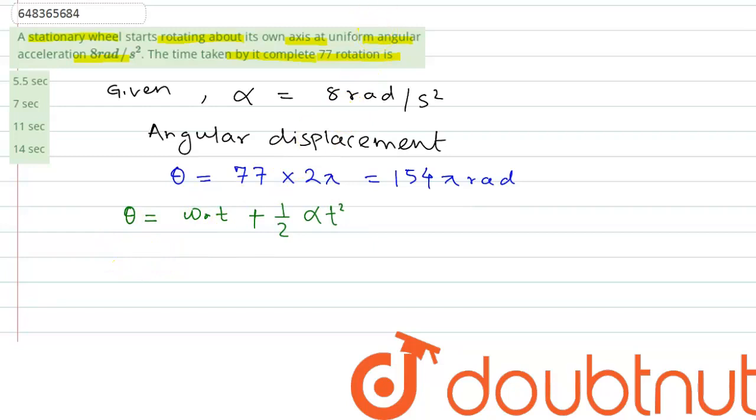So now let us put these values. In place of theta we can write 154 pi. This will be omega 0. It is starting from zero, so zero plus half alpha is 8 into t square. So we have to find out time period.